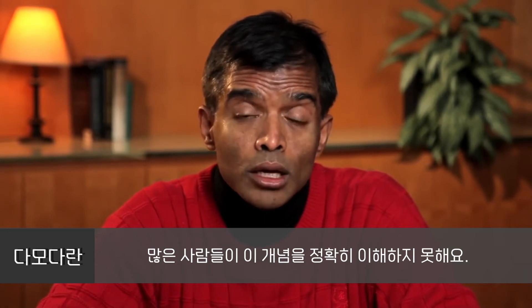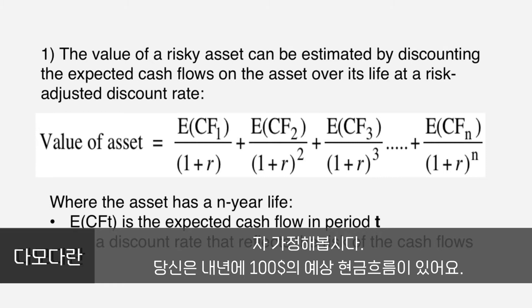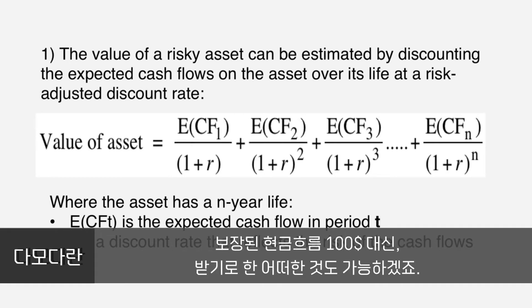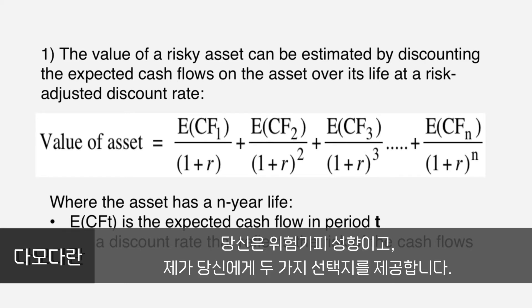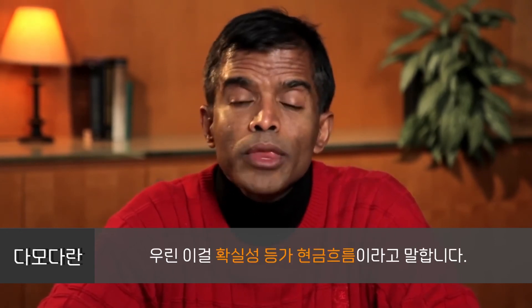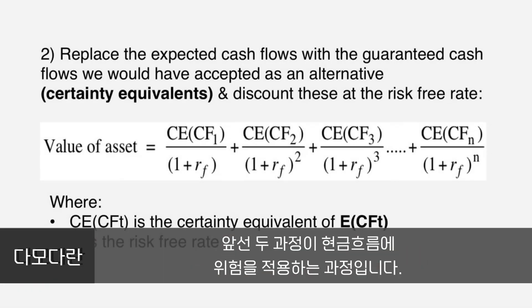Rather than adjusting the discount rate for risk, you can try to adjust the cash flow for risk. Let's assume you have $100 in expected cash flows next year, but you're uncertain about those cash flows. Your risk-adjusted cash flow will not be $100 — it will be whatever you would take as a replacement for the $100 as a guaranteed cash flow. If you're risk averse and offered a choice between $100 of risky cash flows or some guaranteed number, you'd probably settle for a lesser number — 90, 95, 92. That's called a certainty equivalent cash flow. It's difficult to do, but you can do it. Those are the two approaches to risk-adjusting discounted cash flows.